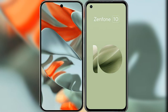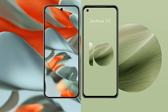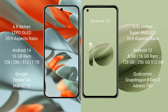I will compare the new Google Pixel 9 Pro XL with the Asus Zenfone 10. The Google Pixel 9 Pro XL features a 6.8-inch LTPO OLED display. The Asus Zenfone 10 features a 5.92-inch Super AMOLED display.